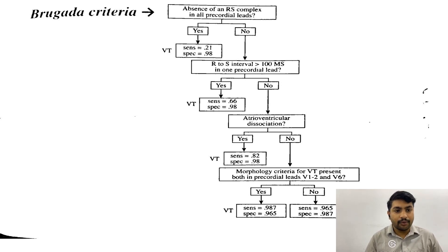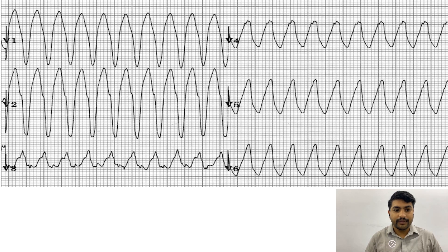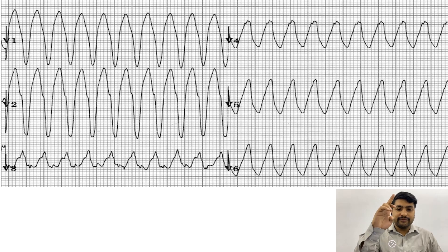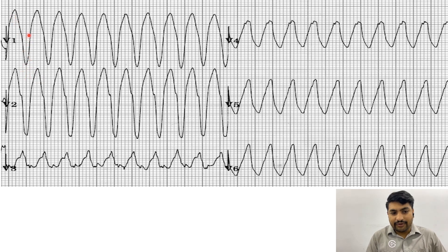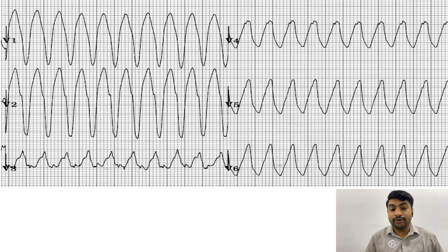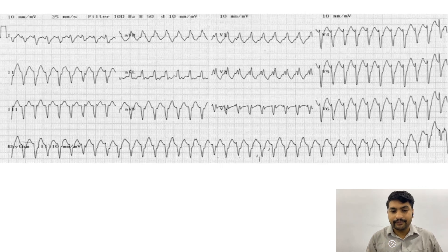This is our first ECG. Can you see that this ECG is going in one direction — either upward or downward? In this case it is going downwards. These are S complexes — a bunch of S complexes with no R wave. So on the very first step, if there is no RS complex, it is VT. This one is VT.